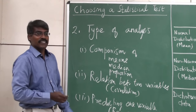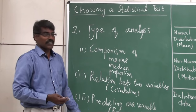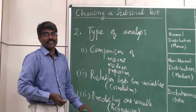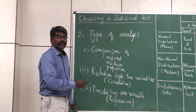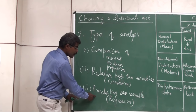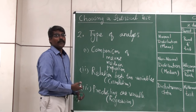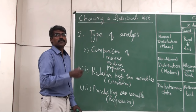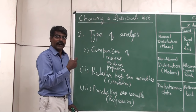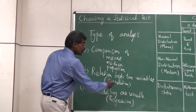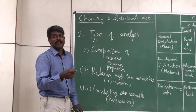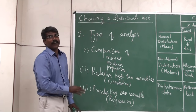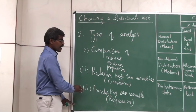The third type of analysis is regression — predicting one variable from another. Here again we have only one group, but we want to predict one variable from another. For example, if a person of 50 kg comes to my outpatient department, what would be his blood pressure? If I want to find that out mathematically, it becomes predicting one variable from another, which is regression analysis.